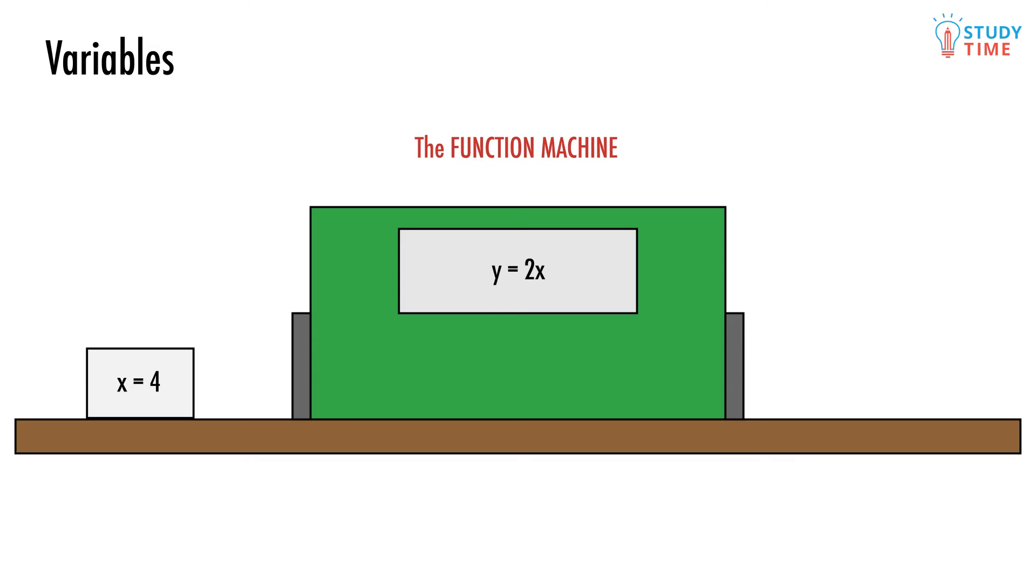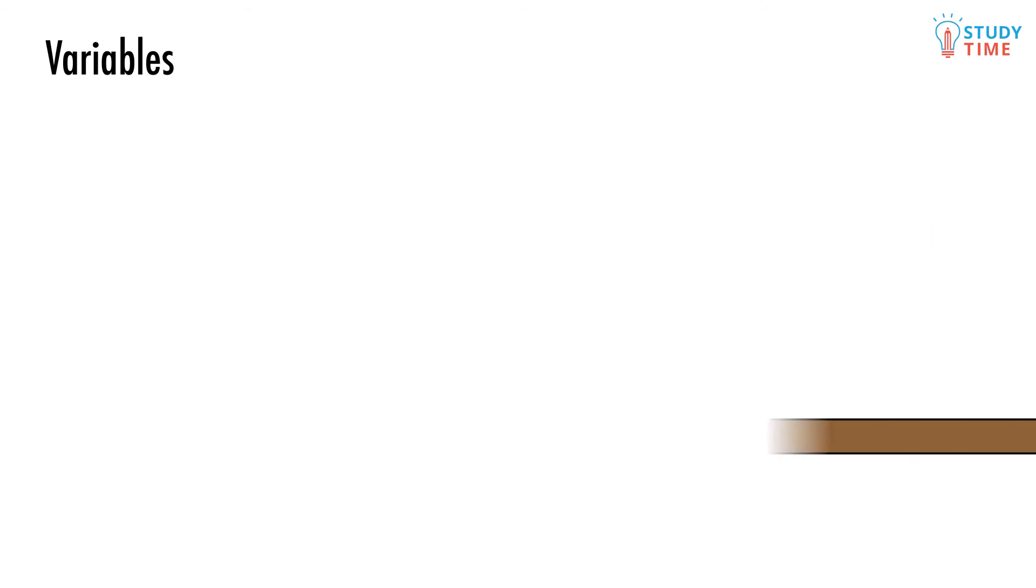When we choose a number for x, we simply replace all the x's in the function with that number. Here's the key thing about functions. For each value of x, there can only be one value of y.